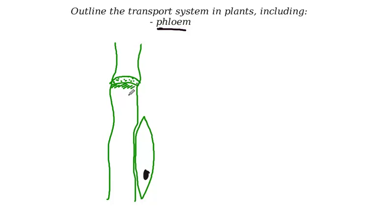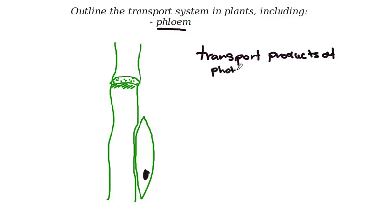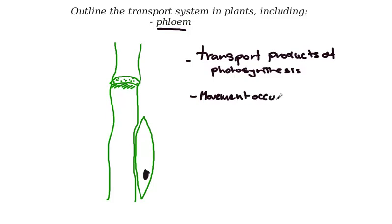The other type of transport vessel is what we call phloem. Phloem is different to xylem in two ways. First, phloem is responsible for transporting products of photosynthesis — your sugars. Photosynthesis occurs in the leaves and makes sugar, which is then either used in other parts of the plant or stored in fruits or legumes. Unlike xylem which travels from the roots to the leaves, the movement of phloem products can move in both directions.